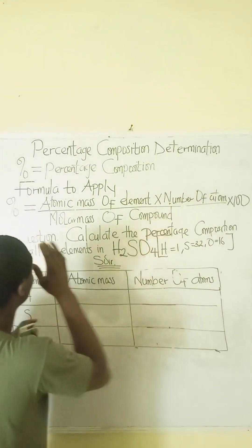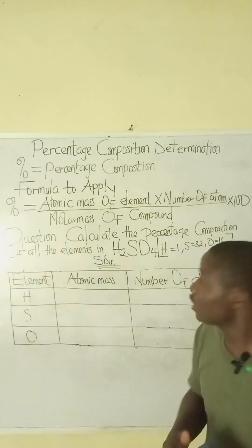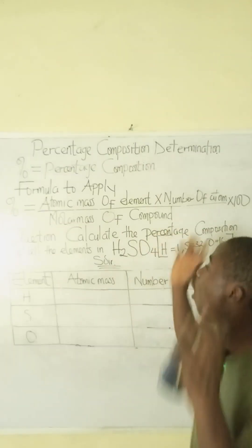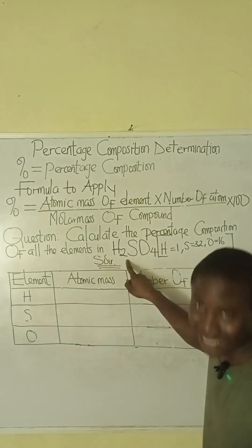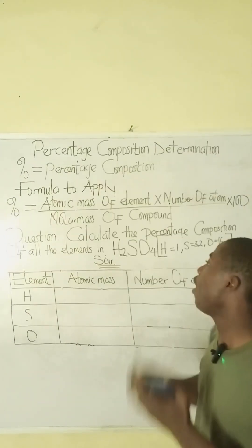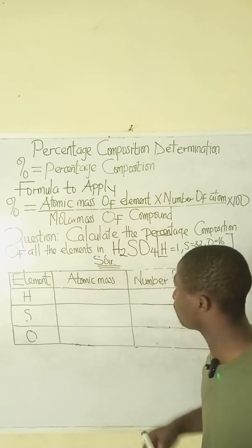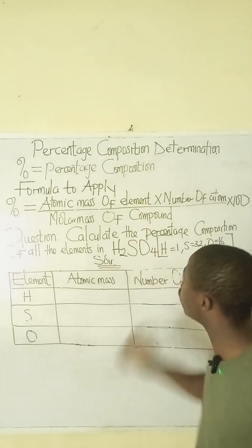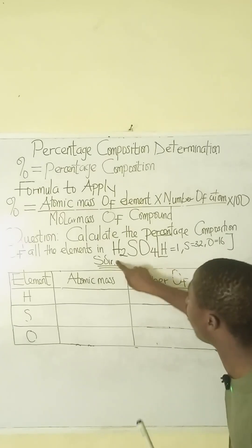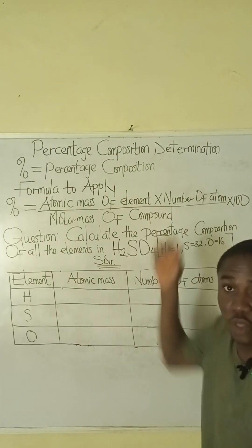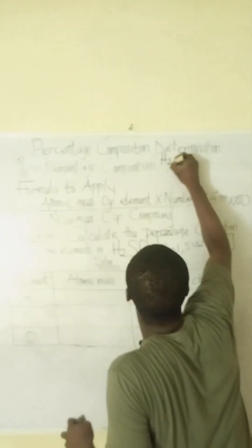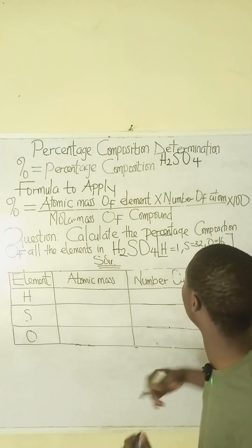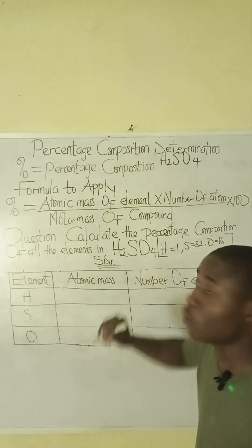The practice question says: calculate the percentage composition of all the elements in H₂SO₄. Before we solve for the percentage composition of each element, we have to first solve for the molar mass of the compound H₂SO₄.